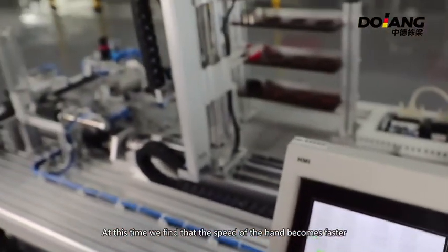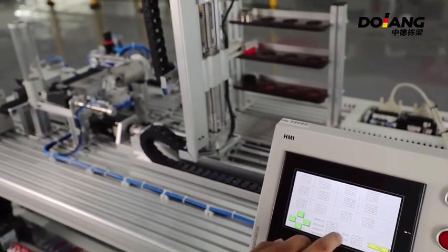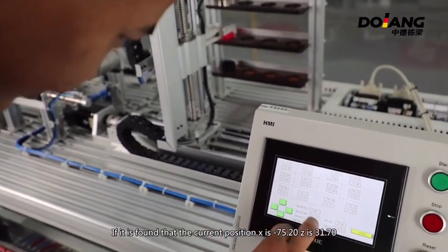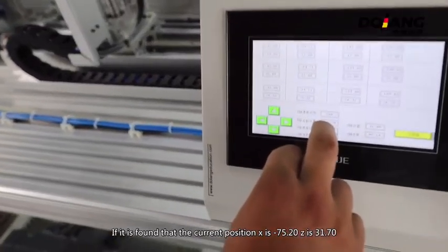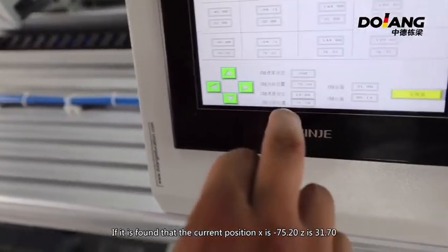At this time, we found that the speed of the hand becomes faster. If we find the current position X is minus 75.20, Z is 31.70.